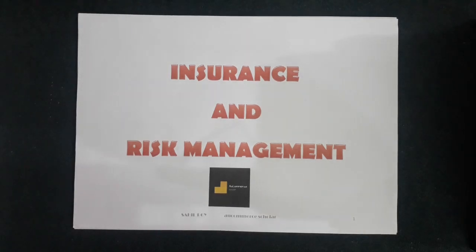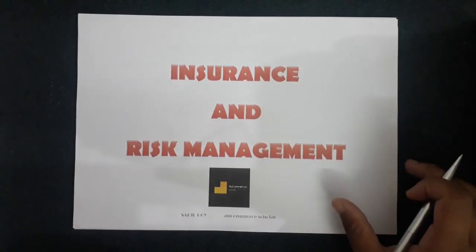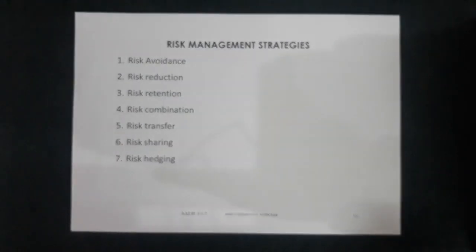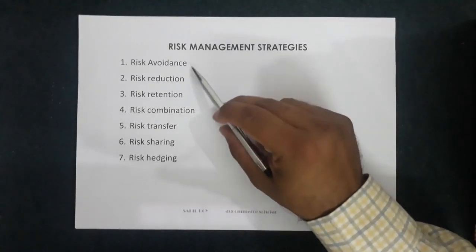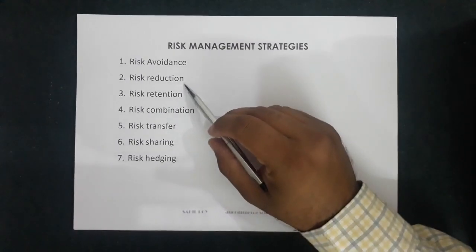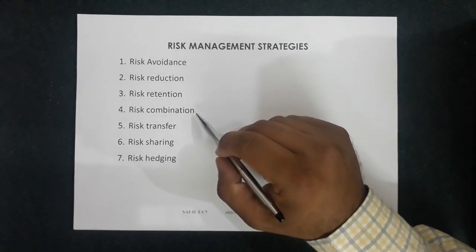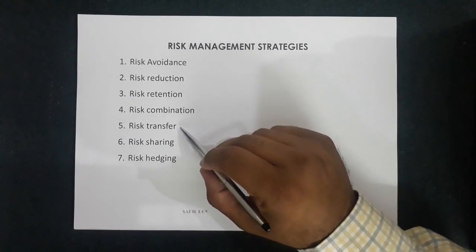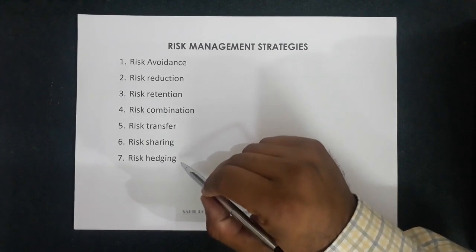Hello friends, this is the fifth part of Insurance and Risk Management. In this section we are going to cover risk management strategies. The seven strategies are: risk avoidance, risk reduction, risk retention, risk combination, risk transfer, risk sharing, and risk hedging.